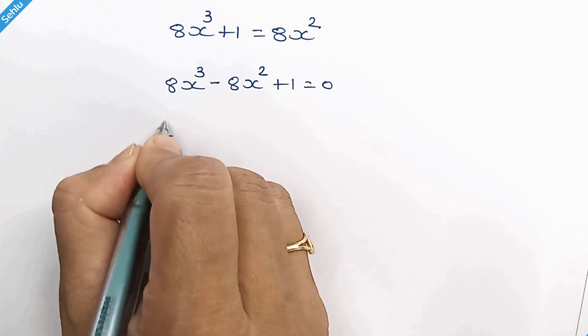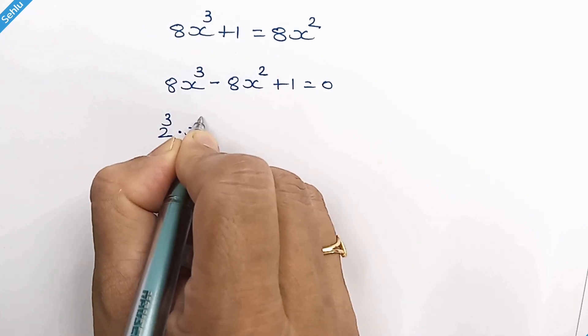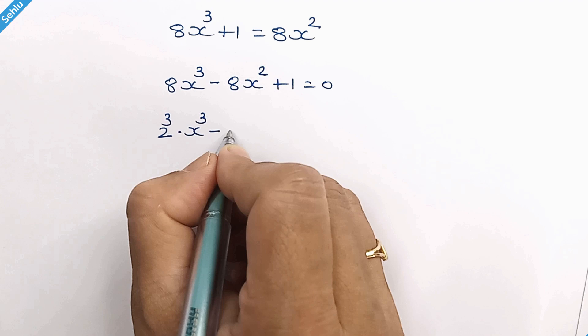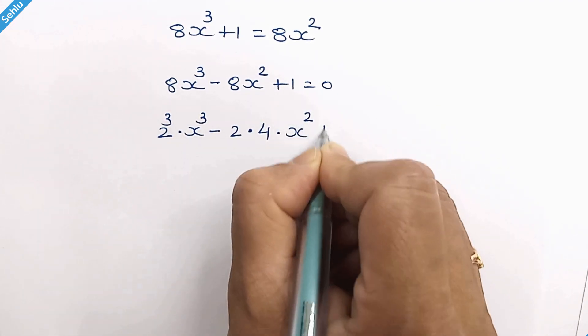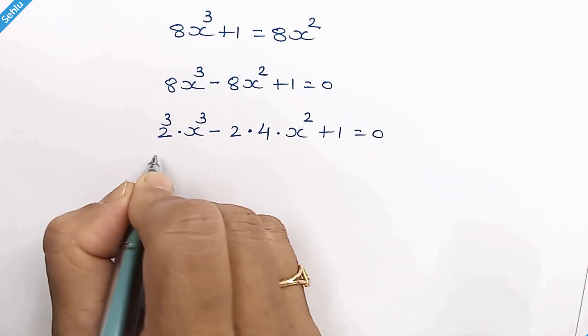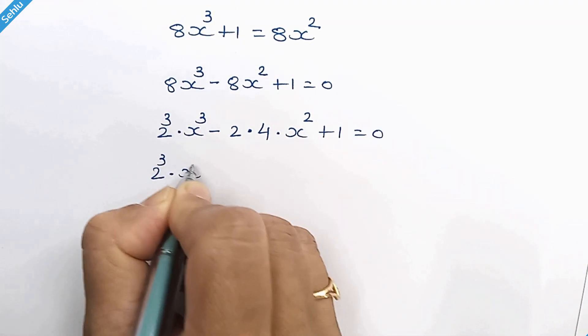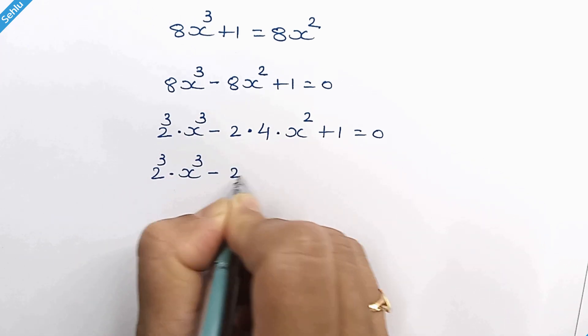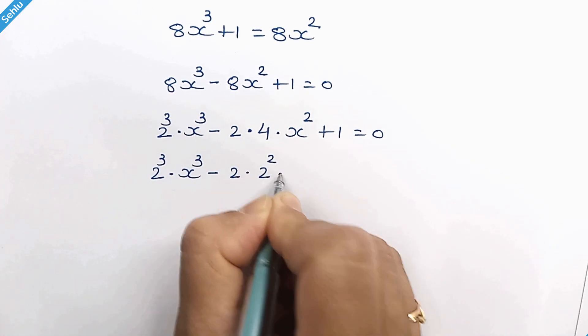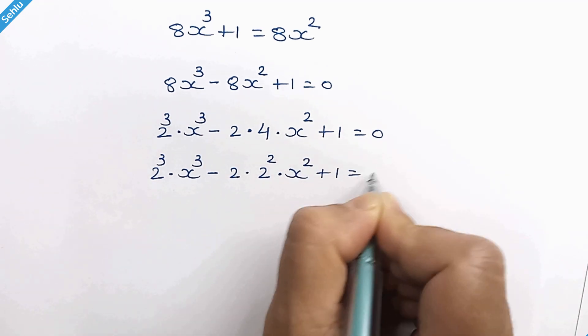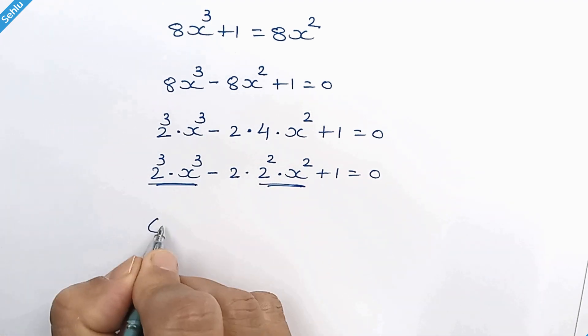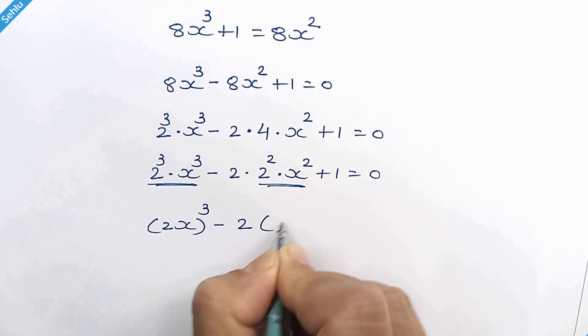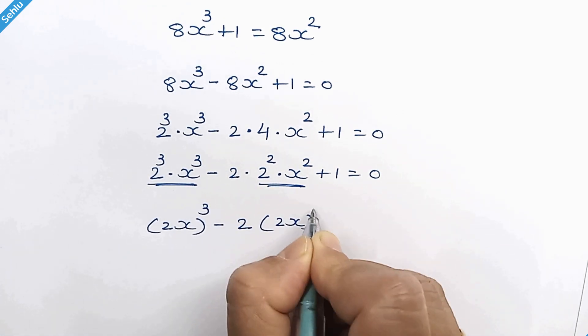8 is 2 cube, and also 8 can be written as 2 times 4, and 4 is 2 square. We can combine this 2 and this 2, so we have 2x whole cube minus 2 times 2x whole square plus 1.